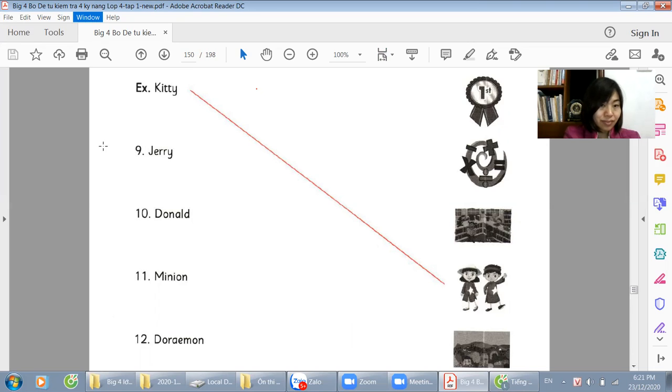What nationality is kitty? She's Vietnamese. So the example. What nationality is kitty? Kitty is Vietnamese. So you can see the dresses that the boy and the girl are wearing with the flag with the star on it. That's Vietnamese.